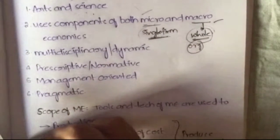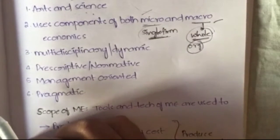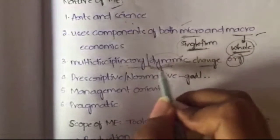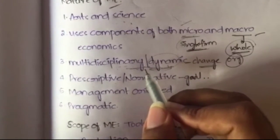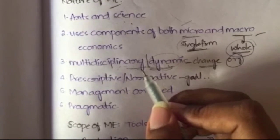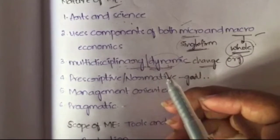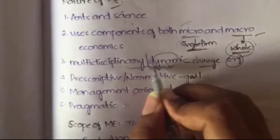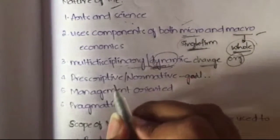The third aspect is that managerial economics is multidisciplinary or dynamic in nature. When you go into a business field you will face different types of situations, so managerial economics should change according to what is happening. That is why it is called dynamic — it adapts to the situation.